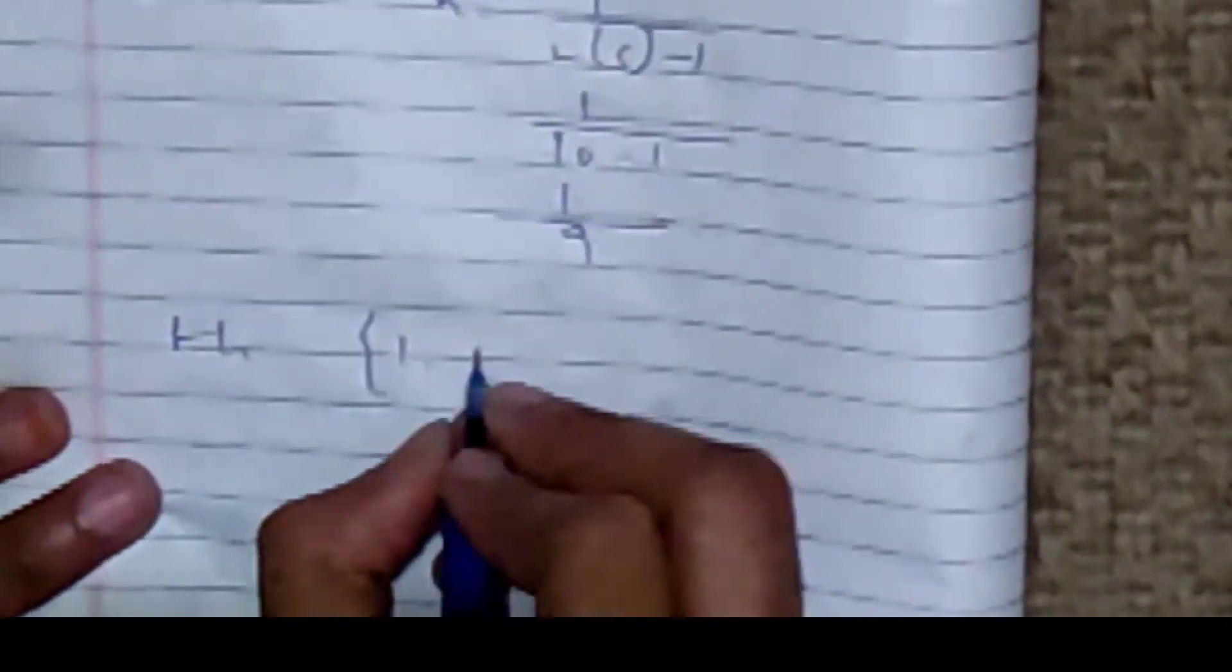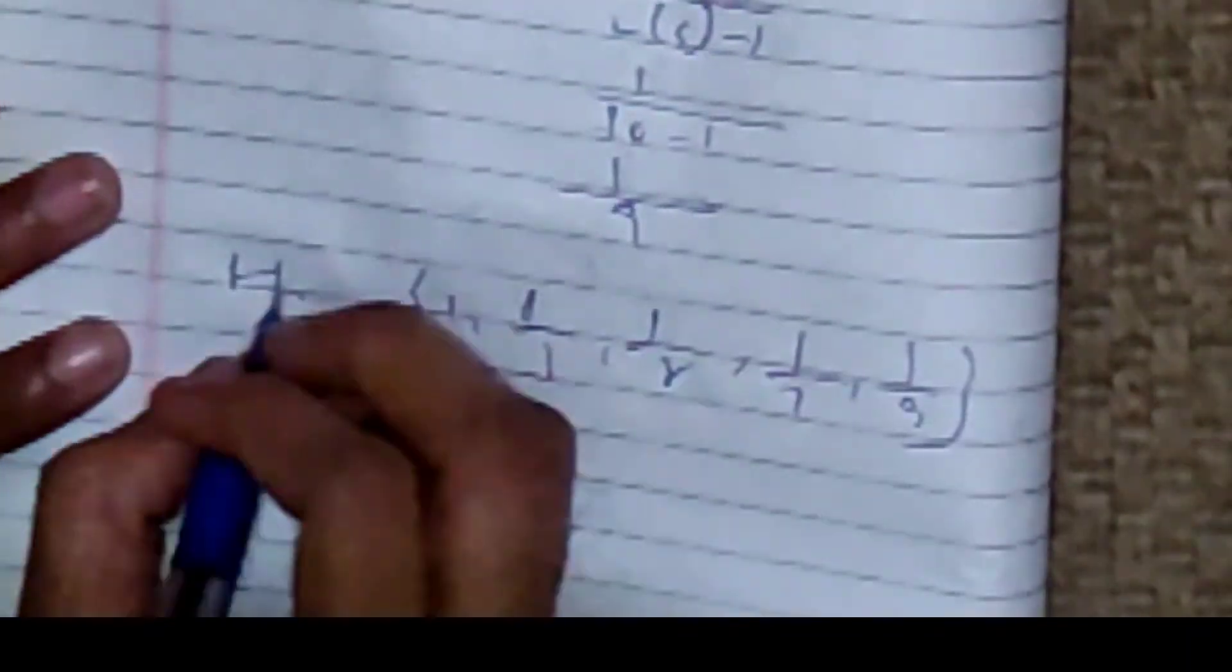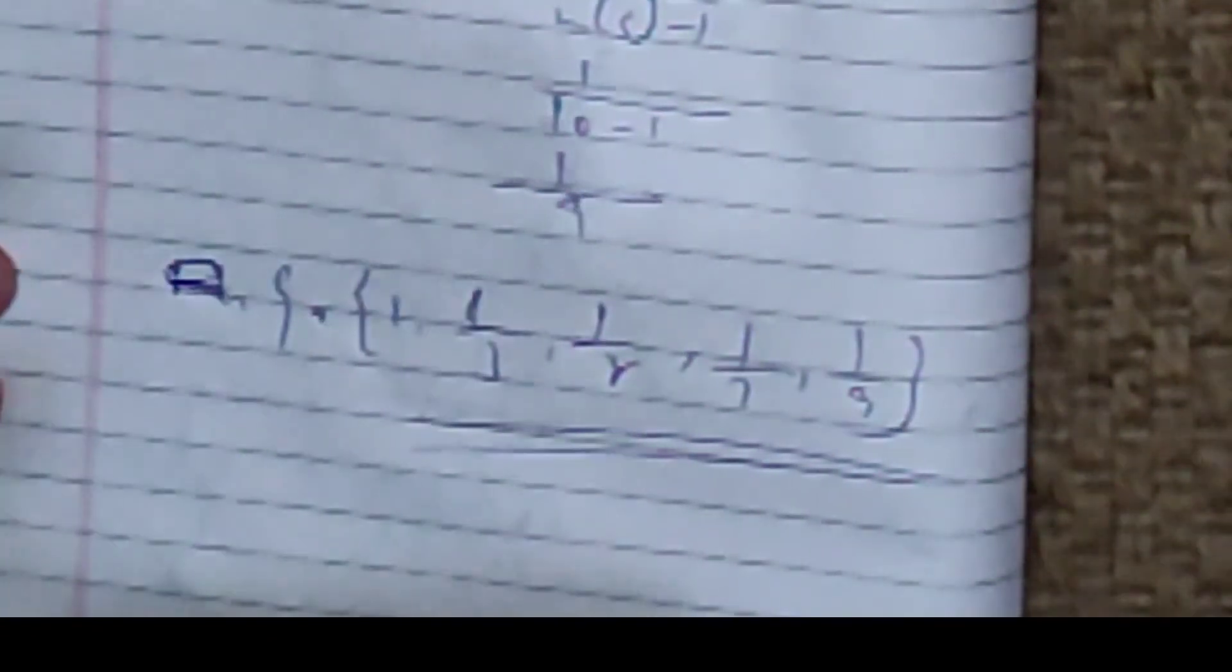The set values are: 1, 1 by 3, 1 by 5, 1 by 7, 1 by 9. Thanks for watching.